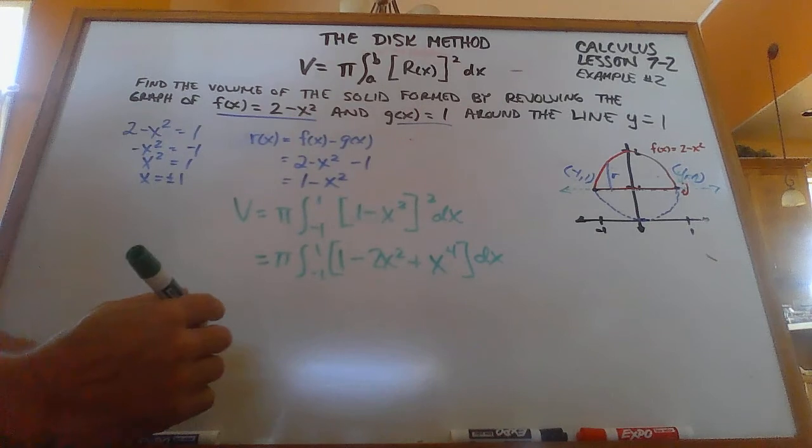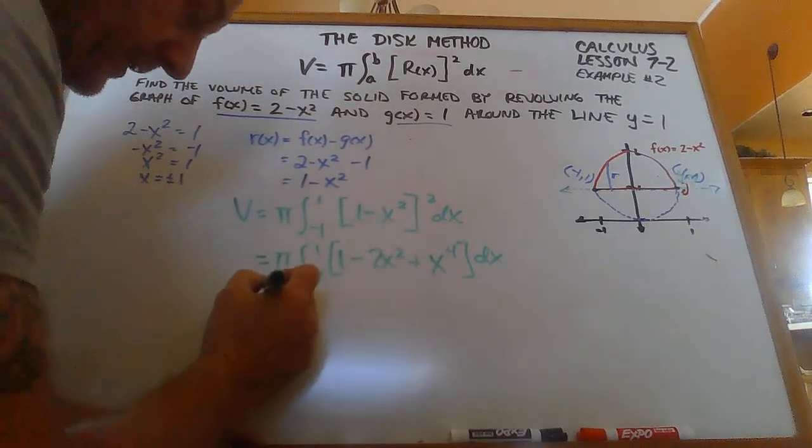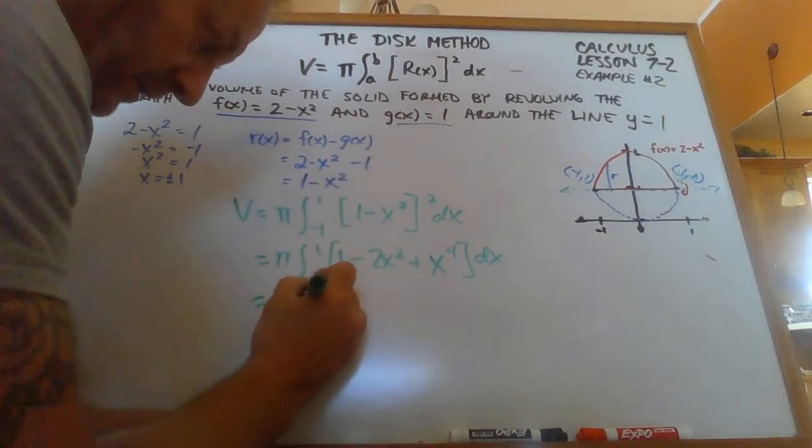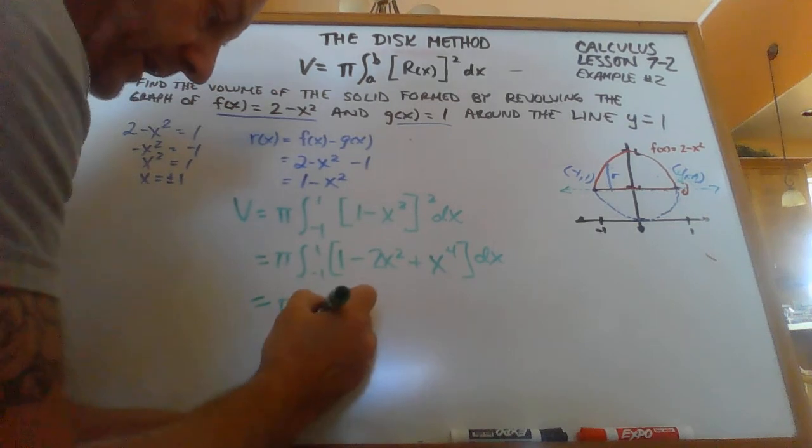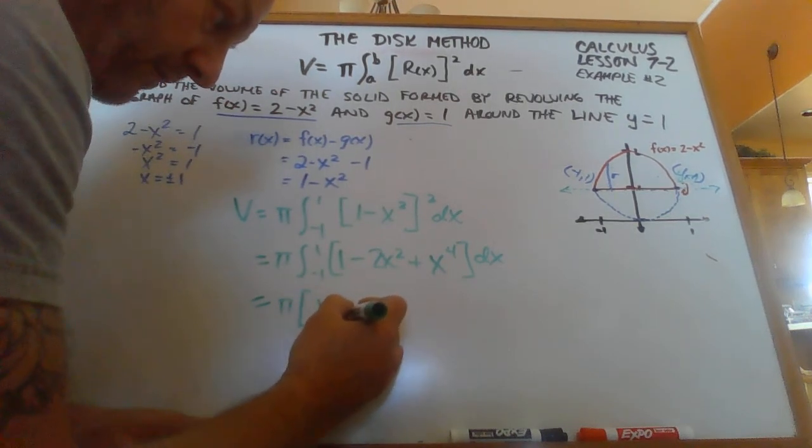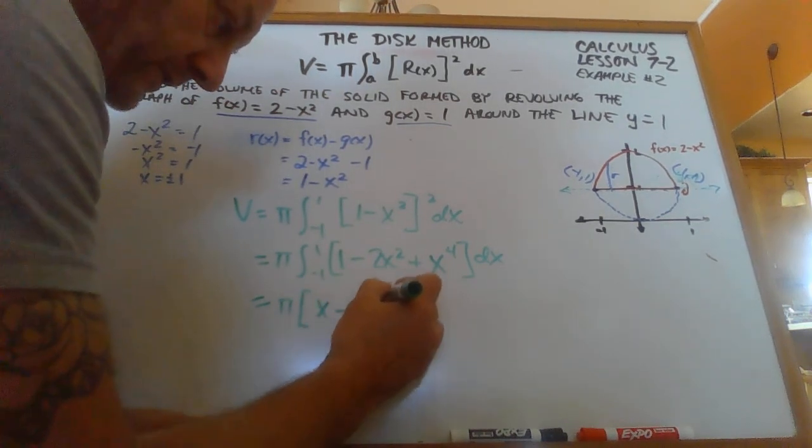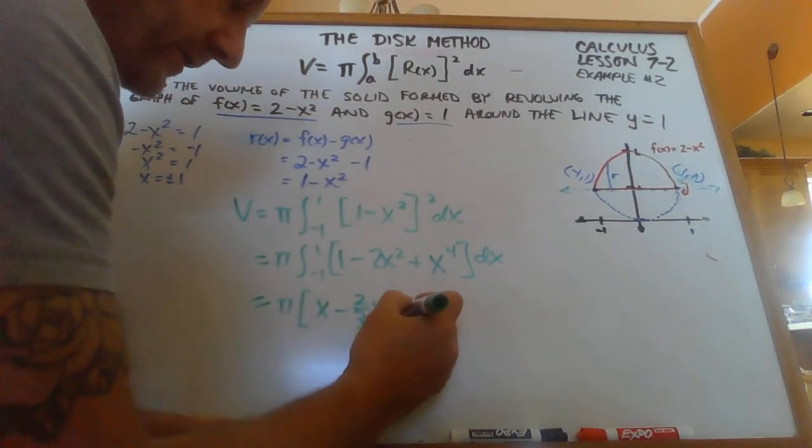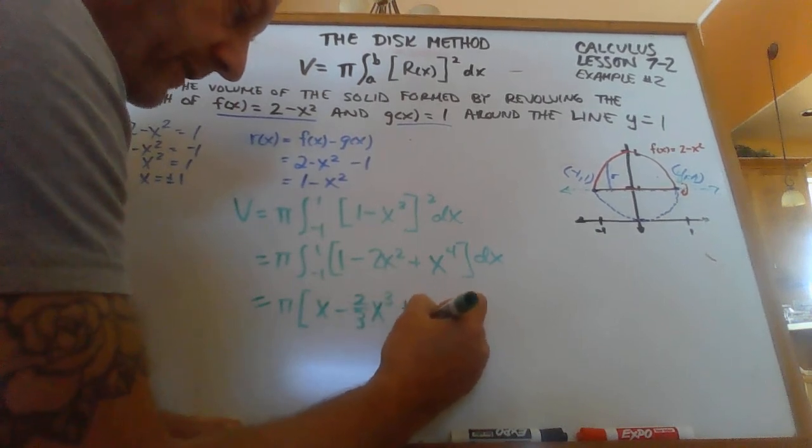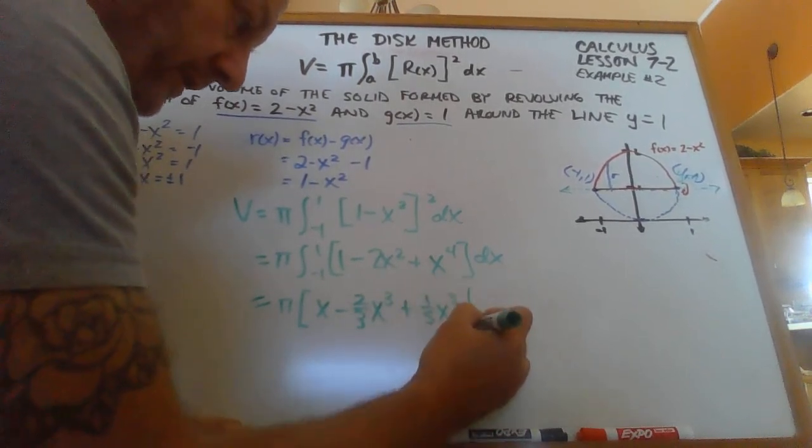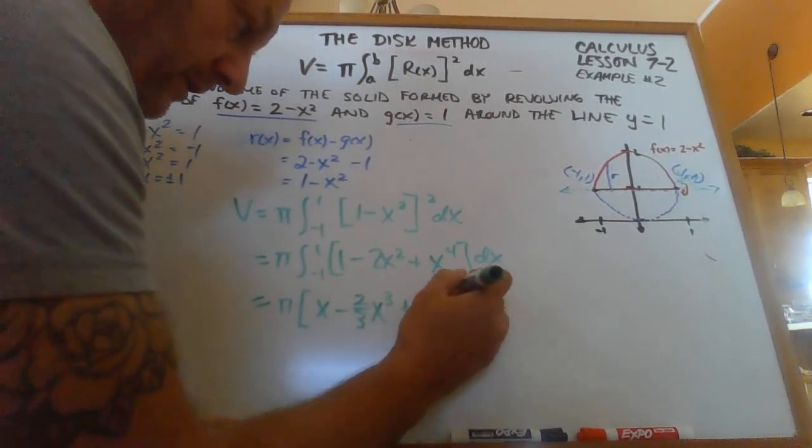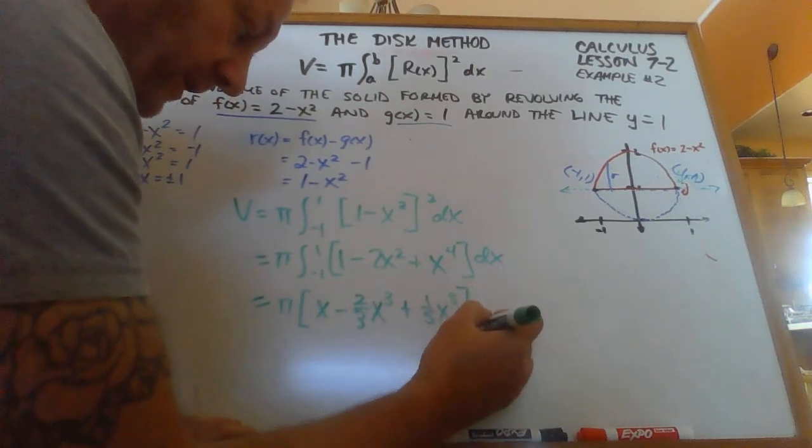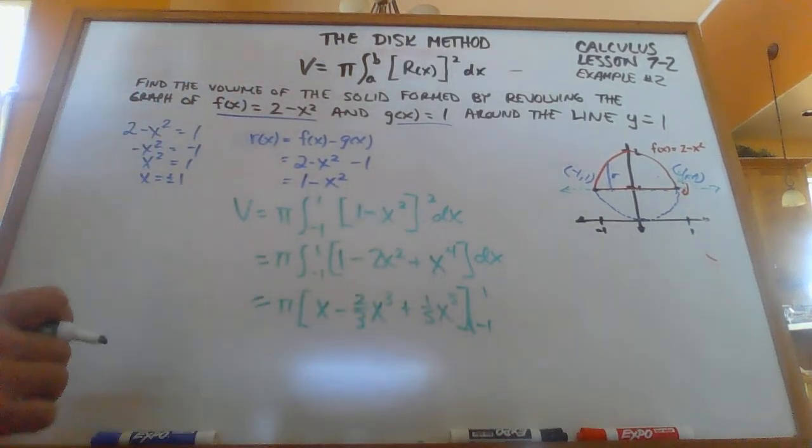Now the rest of this is fairly easy. So I integrate this thing. So that's going to be x minus 2 thirds x to the 3rd. And this is going to be plus 1 5th x to the 5th. And I want to evaluate that from negative 1 to positive 1.